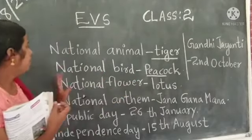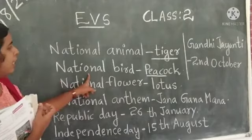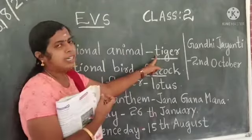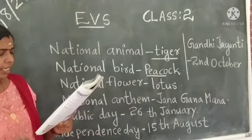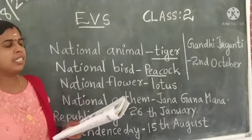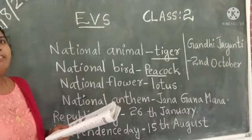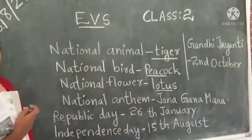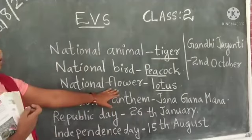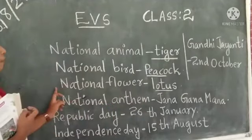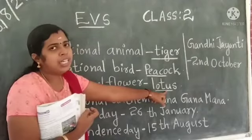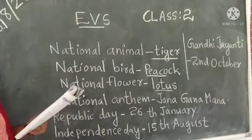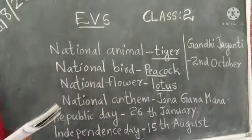The national bird of India is peacock and the national animal is tiger. India's national flower is the lotus. The national flower of India is lotus, and the lotus grows in water.